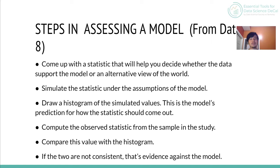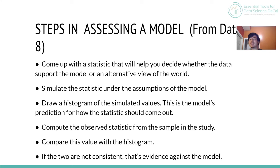Now that we've finished watching Saeed's model in his Jupyter notebook of how to simulate a hypothesis test using a two-sided coin flip, we'll go over a few things to wrap up. The steps for assessing a model: first, come up with a statistic that will help you decide whether your data supports the model you have. Then simulate the statistic — we saw 10,000 iterations of a coin flip creating a normal distribution. We draw a histogram of all those values, compute the observed statistic from the sample, compare it with the histogram, and then decide whether to reject or keep our hypothesis.